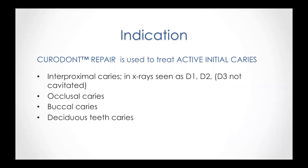The indications are interproximal, occlusal, buccal, and it also works on deciduous teeth. Very important: it needs to be an initial caries which is active. An active caries is characterized by a white, opaque, and rough spot — the surface is not shiny. For those lesions, Cordon Repair is the treatment method of choice. Inactive caries can also be treated but it would not work, because the top part of the tooth has already remineralized and those porosities are no longer present, so the product cannot penetrate into the depth of the tooth. Inactive caries like brown or black spots, or teeth with a shiny white spot surface, should not be treated — it will not work.